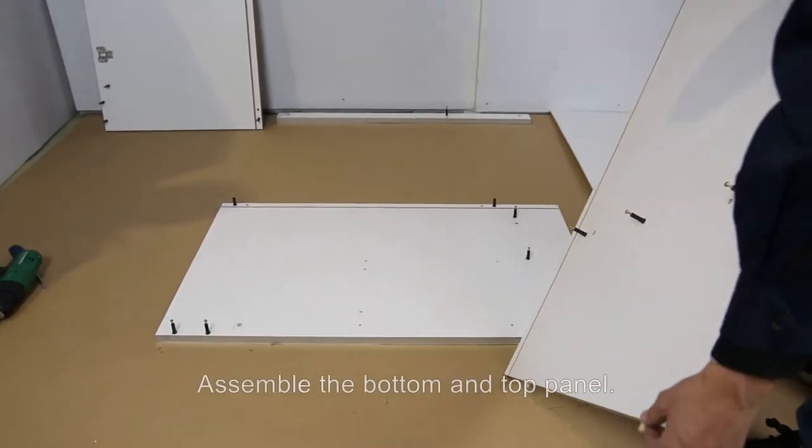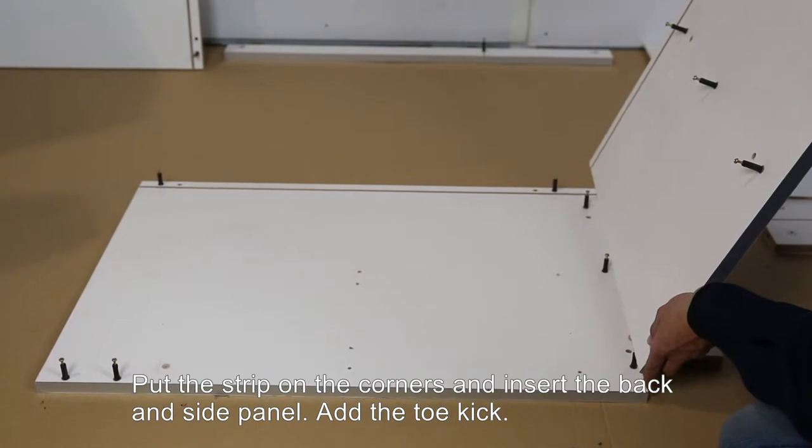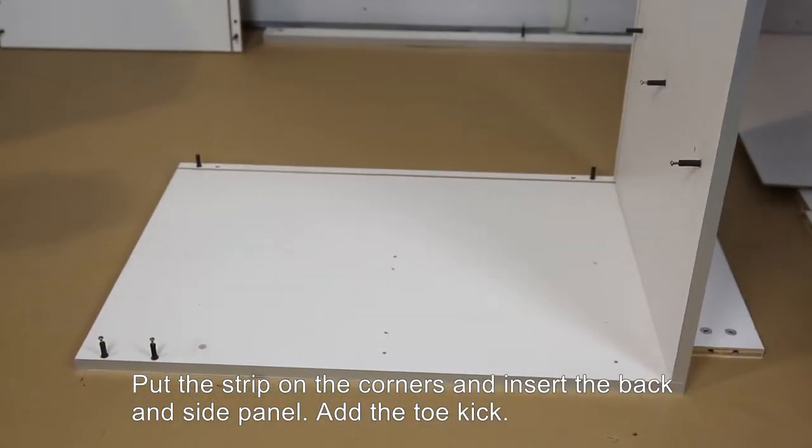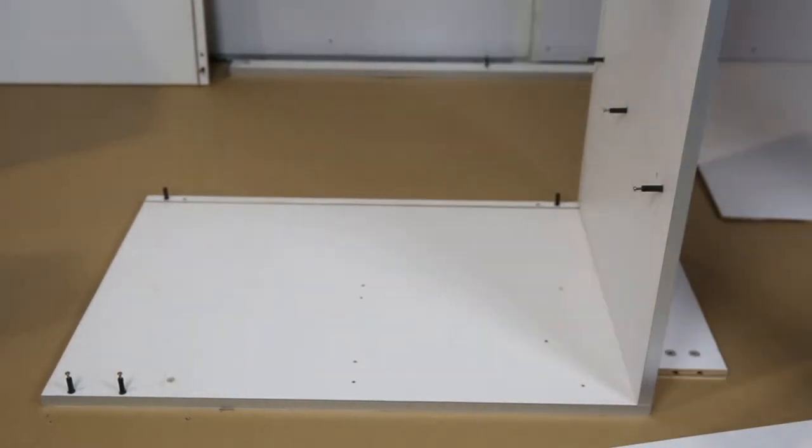Next, assemble the bottom and top panels. Put the strip on the corners and insert the back and side panels. Add the toe kick. Put the strip on the back.